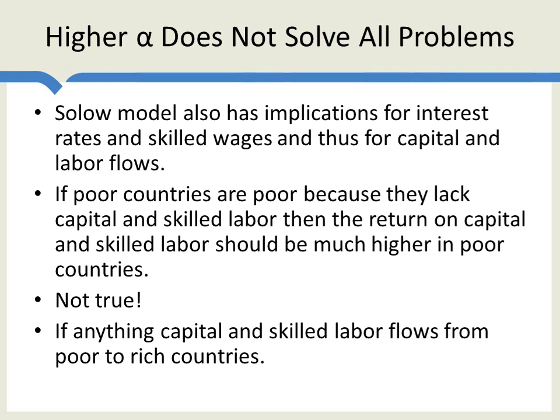All of these things suggest that a higher alpha is not going to solve all the problems, and the Solow model, taken as a model of capital investment as a source of growth, cannot explain all the large income ratio differences we observe. To get there, we need to add differences in productivity across nations — and that's something we'll look at in the next video.